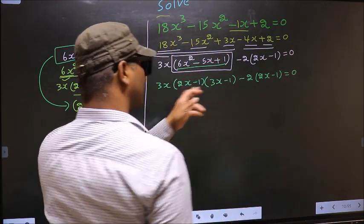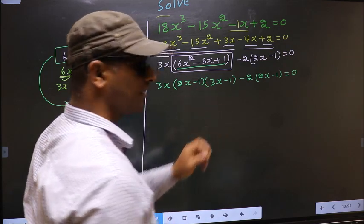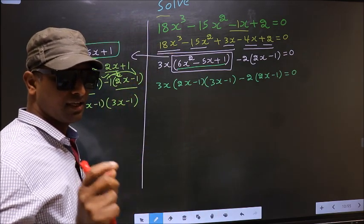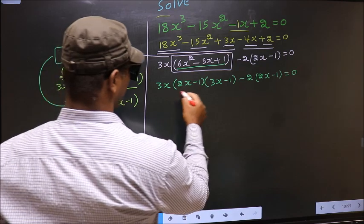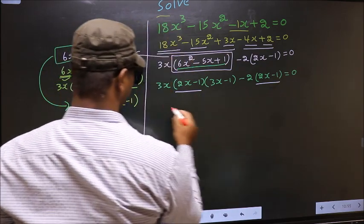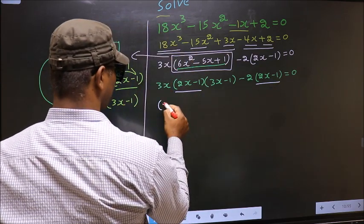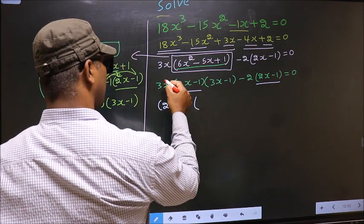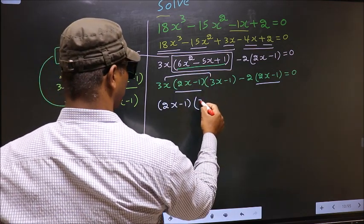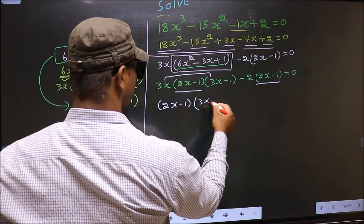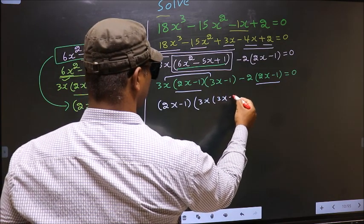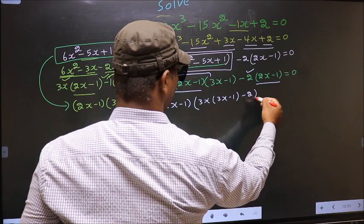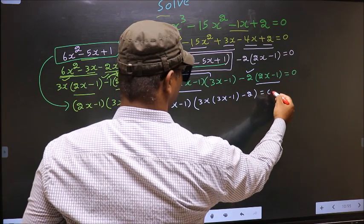Now from this entire equation, what can be taken out common is 2x minus 1. So 2x minus 1 outside. Over here we are left with these 2, that is 3x times 3x minus 1. And over here we are left with minus 2.